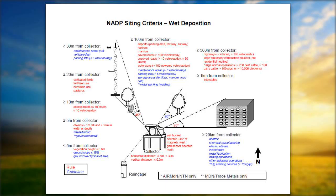Greater than 500 meters from highways, large stationary combustion sources, and large animal operations; greater than one kilometer from interstates. Guidelines around the collector also include electrical utilities, chemical manufacturing, mining operations, medical fabrication, incinerators, and other industrial operations. For the horizontal distance, the gauge should be greater than five meters and no more than 30 meters from the collector; vertical distance should be no more than one foot above or below the rain gauge or bucket collector setting.